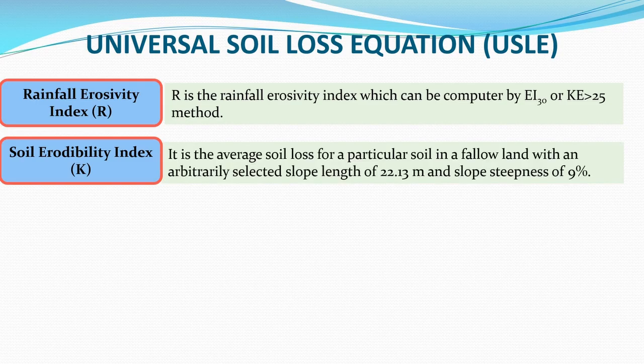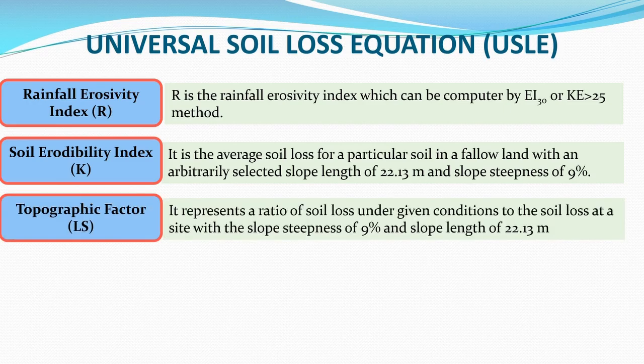The Soil Erodibility Index K is the average soil loss for a particular soil in a fallow land with an arbitrarily selected slope length of 22.13 meters and slope steepness of 9 percent. The Topographic Factor LS represents the ratio of soil loss under given conditions to the soil loss at a site with slope steepness of 9 percent and slope length of 22.13 meters.